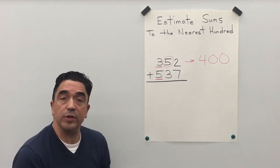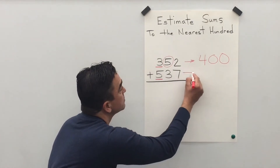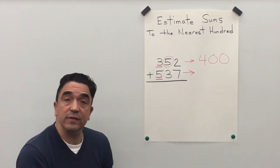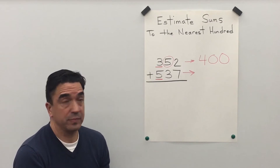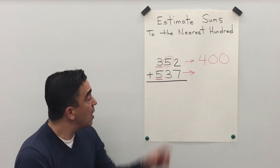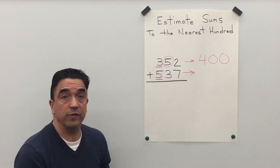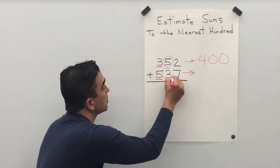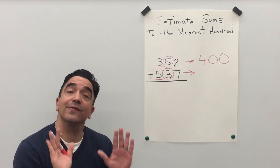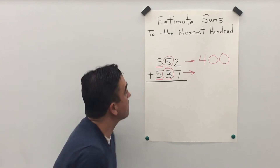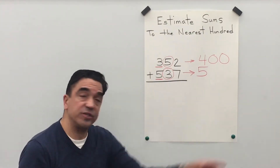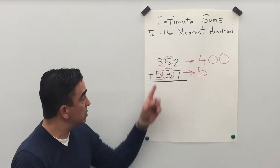Now let's look at 537. The 5 is in the hundreds place and the 3 is in the tens place. The 3 is going to tell the 5 what to do — the 3 is going to tell the 5 to stay the same. All the digits after become 0. Two digits.